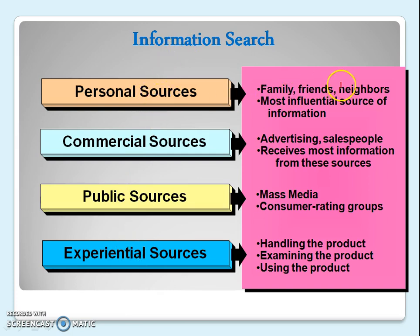Personal source means the information we collect from family, friends, and neighbors. This is the most influential source of information because we rely on them. Commercial source means the advertisements we see on TV, in newspapers, or on radio, or the information we get from salespeople. We receive most of the information about products from these commercial sources.